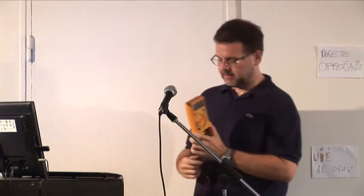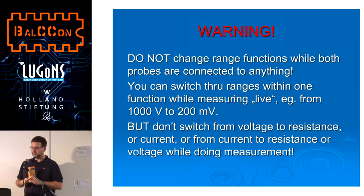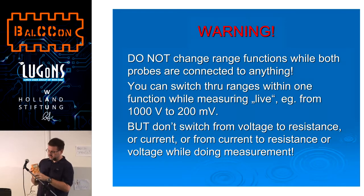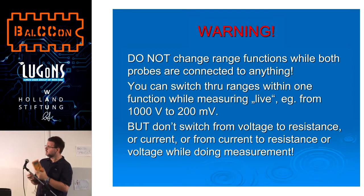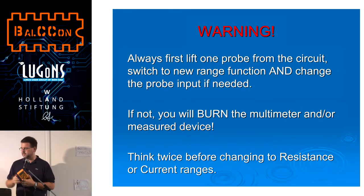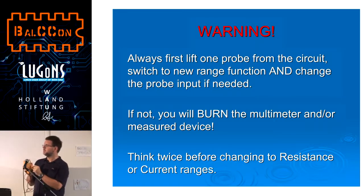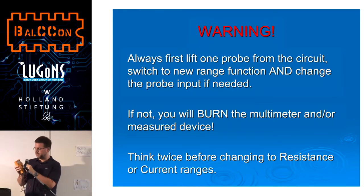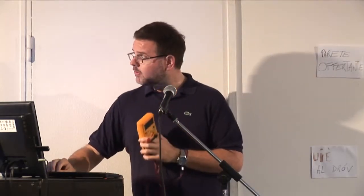If you know what voltage you're going to measure, put your range one step higher. If not, start from 1000 volts. You have to remember: never, never, never change the function while measuring. So if you're measuring voltage and decide to measure resistance, don't leave your probes in — you could burn something, the multimeter or the device you're measuring. Always lift one probe when you change functions. You can change voltage ranges during measurement, but not from voltage to current to resistance.